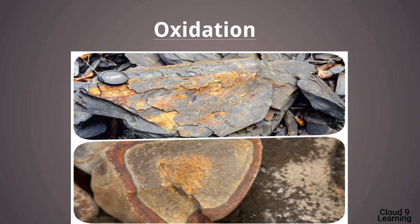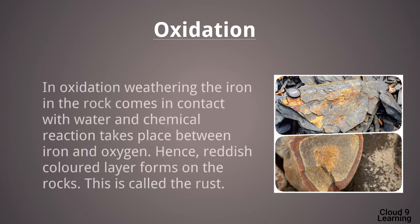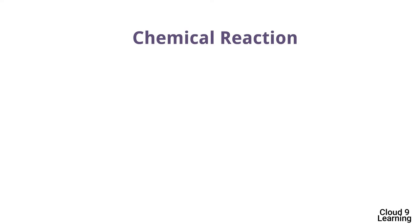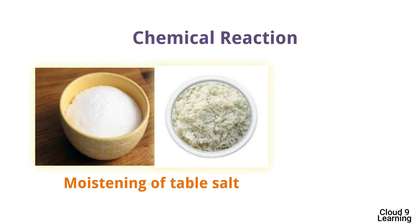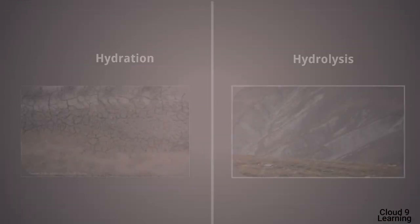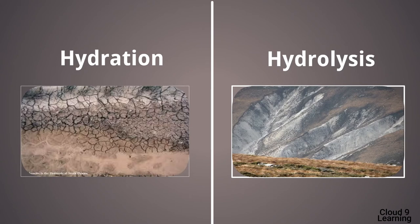The next type is oxidation. Oxidation occurs in rocks that contain iron — the iron comes in contact with water and a chemical reaction takes place between iron and oxygen, forming a reddish-colored layer called rust on the rocks. This is the same process we observed in the nail activity. It occurs in areas of high rainfall. In daily life, examples include moistening of table salt in rainy season and apple slices turning brown. Additionally, two more processes — hydration and hydrolysis — exist but are not covered in the book.